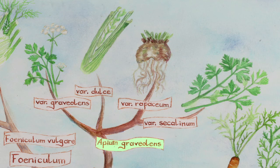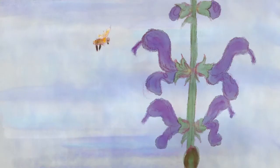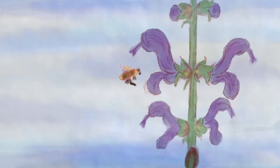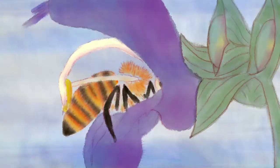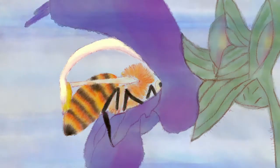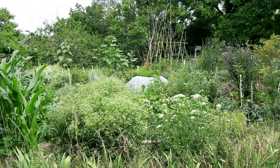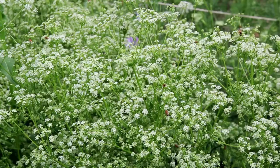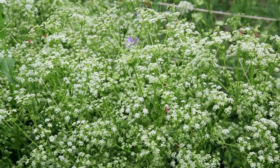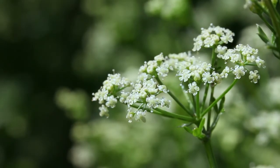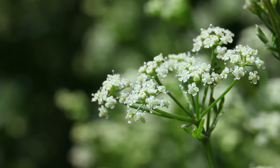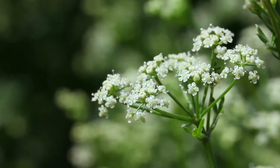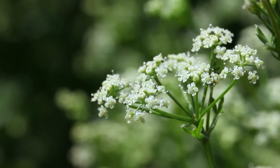The wild variety of celery is called smallage. The inflorescence of the celery is an umbel composed of small flowers that are usually hermaphrodite.